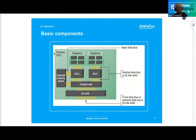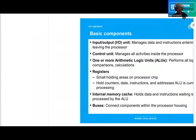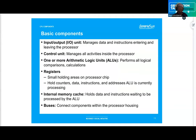Here are the basic components of a Pentium chip — pretend this is that little square. You have the input/output unit, which brings things from the bus. You have the control unit — like a traffic controller. You have your internal memory cache, your ALUs, and your registers overall within the chip. The I/O unit is the one that manages instructions entering and leaving the actual processor — it's what touches the motherboard. The control unit manages all activities inside — it's the cop, the controller of everything going on in here.